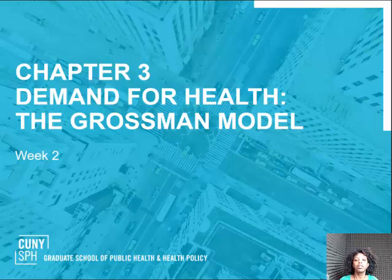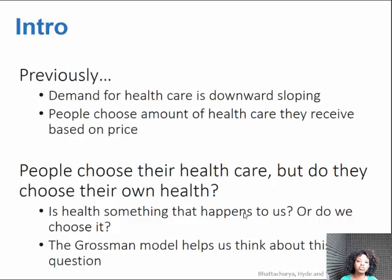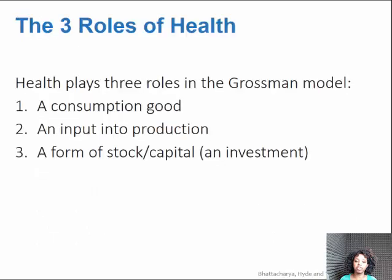This week we'll be talking about the Grossman model for understanding demand for health care. Previously we talked about how the demand for health care is downward sloping — people choose the amount of health care they receive based on its price. So people choose their health care, but do they choose their health? Or is health something that just happens to us? The Grossman model provides a framework for how to think about that question.